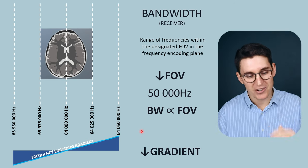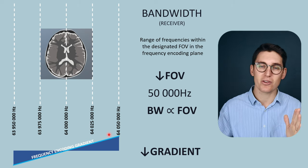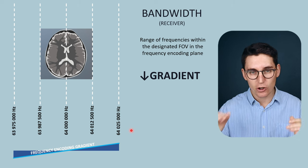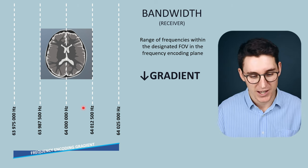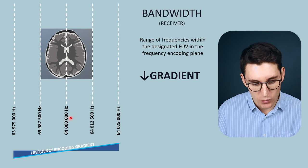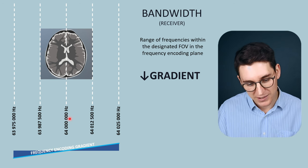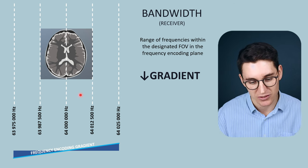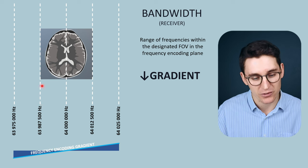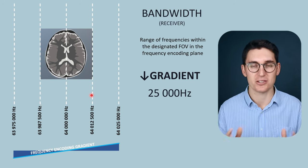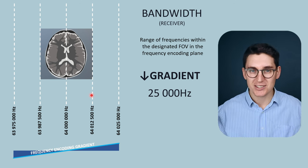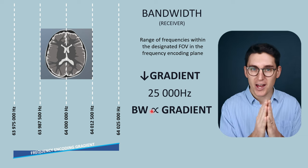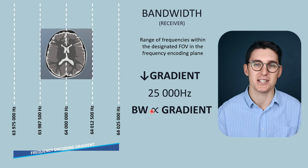What would happen if we decreased the severity of the frequency encoding gradient — decreased the strength of the gradient along the x-axis? The slope of the gradient becomes more gradual across the x-axis. In the previous example we had a 25,000 Hz difference between the center and the periphery; now we've got only a 12,500 Hz difference. Decreasing the gradient has also decreased the bandwidth — now the bandwidth from one end of the slice to the other is only 25,000 Hz. So bandwidth is also proportional to gradient field strength: the stronger the gradient, the greater the bandwidth, the greater the range of frequencies along the x-axis.